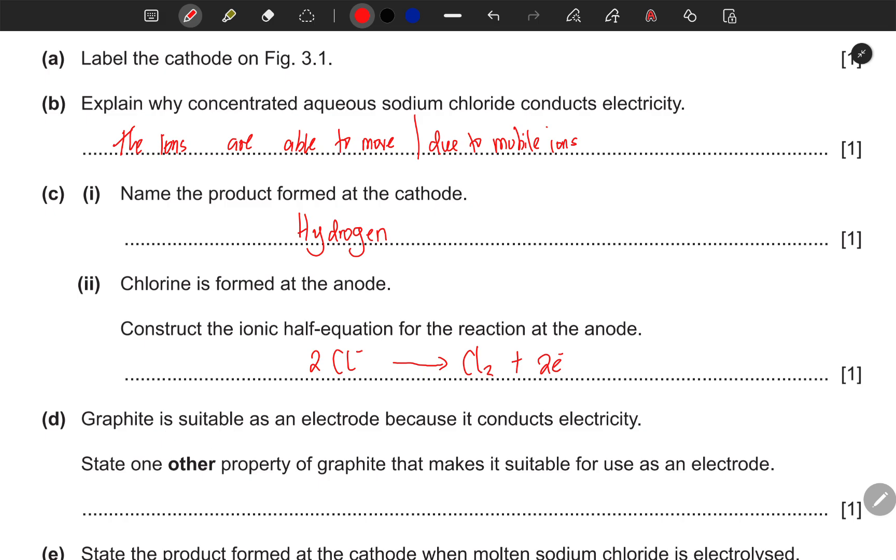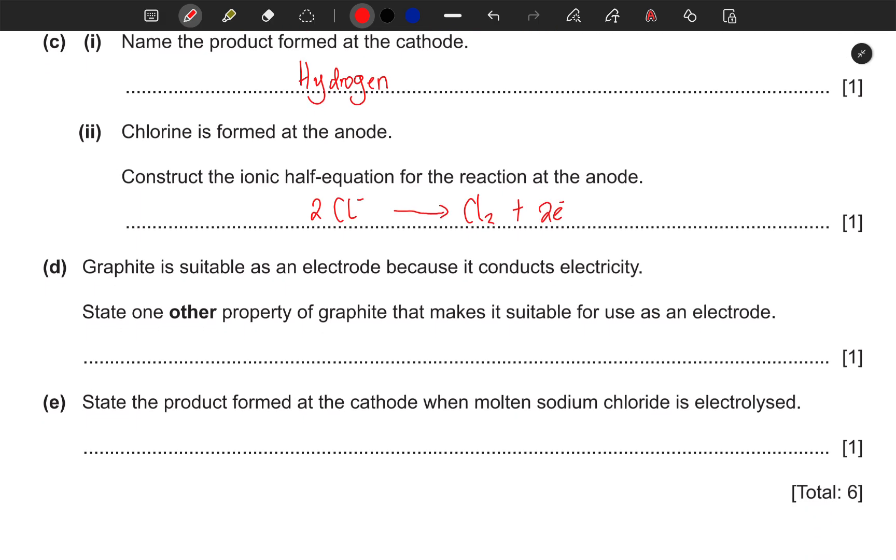Graphite is suitable as an electrode because it conducts electricity. State one other property of graphite that makes it suitable for use as an electrode. So what makes graphite to be used as an electrode in electrolysis?